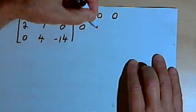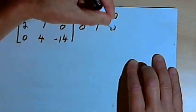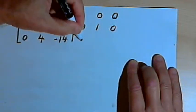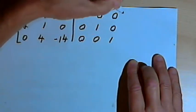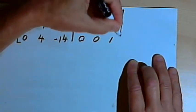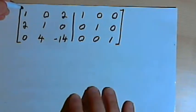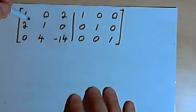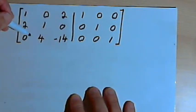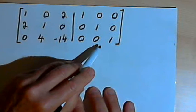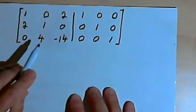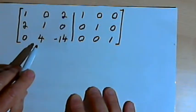The identity matrix is 1, 0, 0, 0, 1, 0, 0, 0, 1. Then we're going to use the Gauss-Jordan elimination method to take the left side and turn that into an identity matrix. And the result will be that the right side is the inverse of our original matrix.